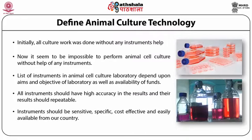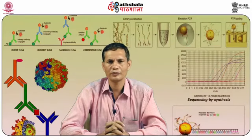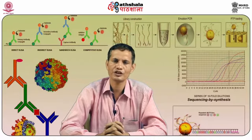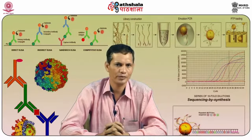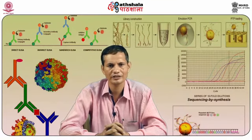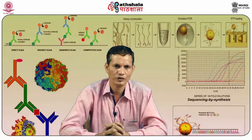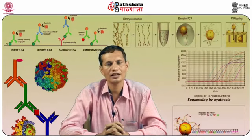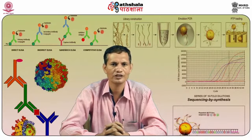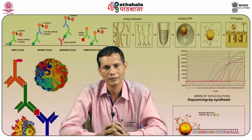Instruments should be sensitive, specific, cost-effective, and easily available in your country so you can purchase them at any time and utilize them in your animal cell culture laboratory. Broadly, the equipment list can be divided into three basic categories: category one — basic instruments; category two — expanded instruments; and category three — useful or additional supply instruments.